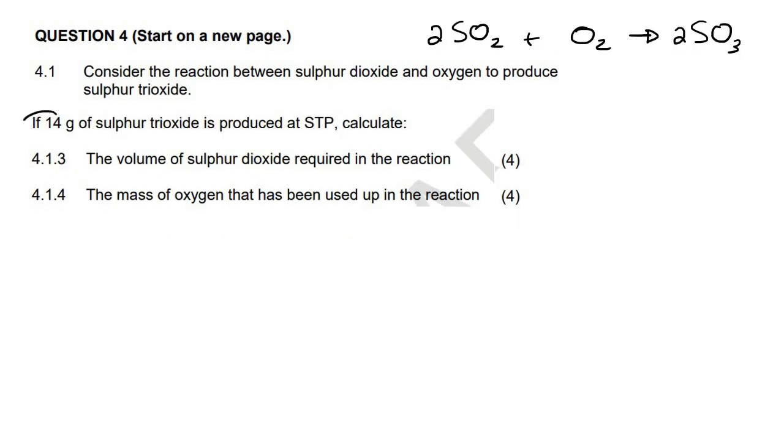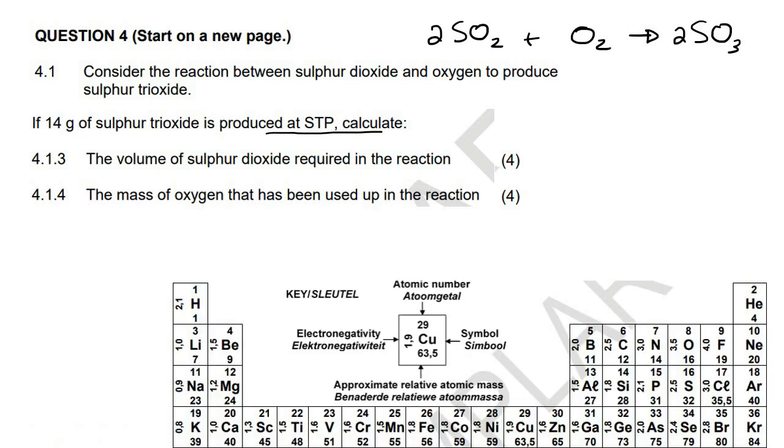If 14 grams of sulfur trioxide is produced at STP, I think we need our periodic table, guys. So they say 14 grams of sulfur trioxide is produced at STP. Calculate the volume of sulfur dioxide required. Very easy question. You're going to take this 14 grams and you're going to convert it into moles over here, just using the formula N equals M over big M.